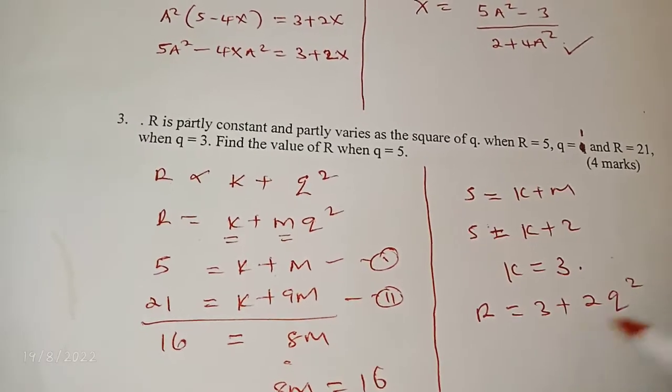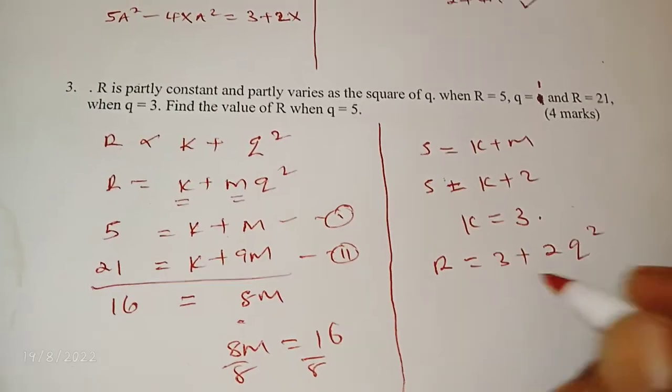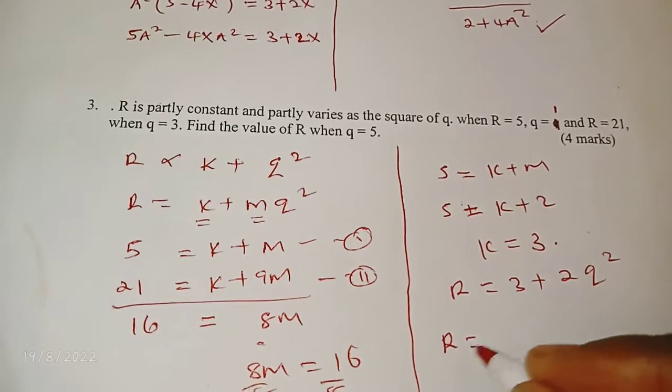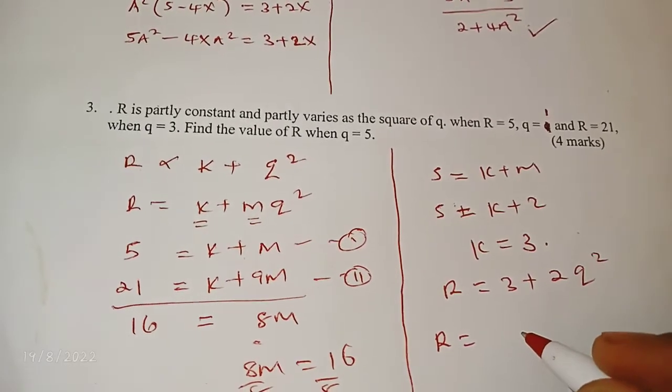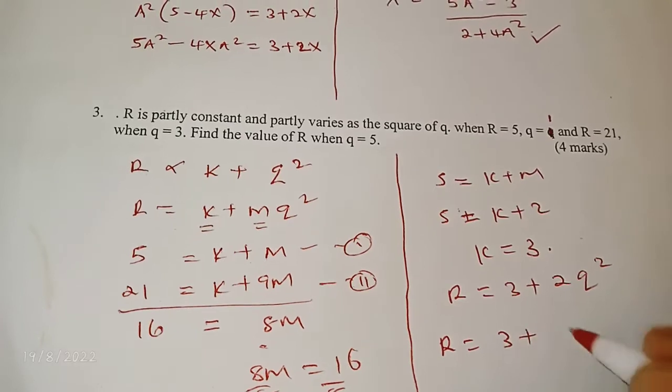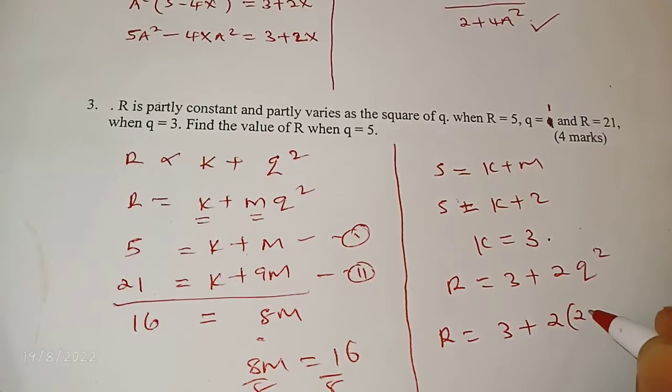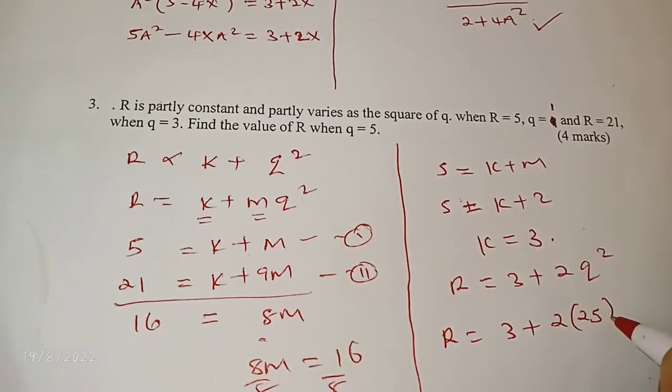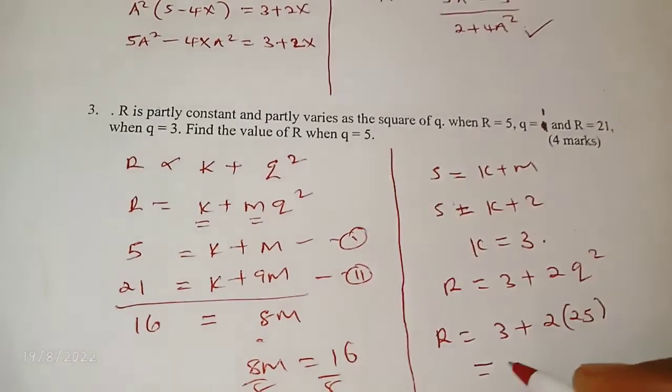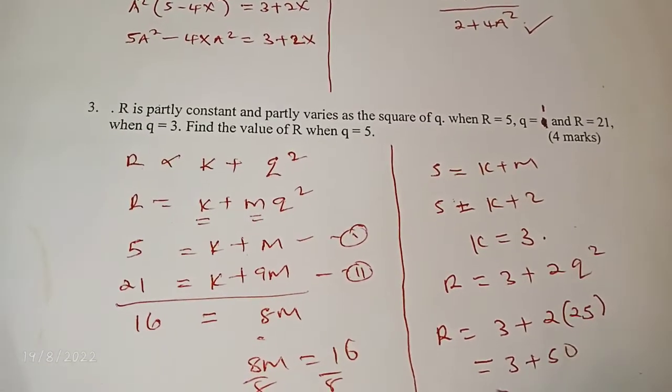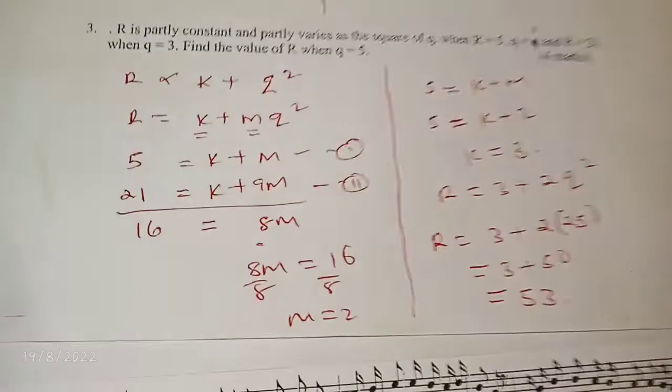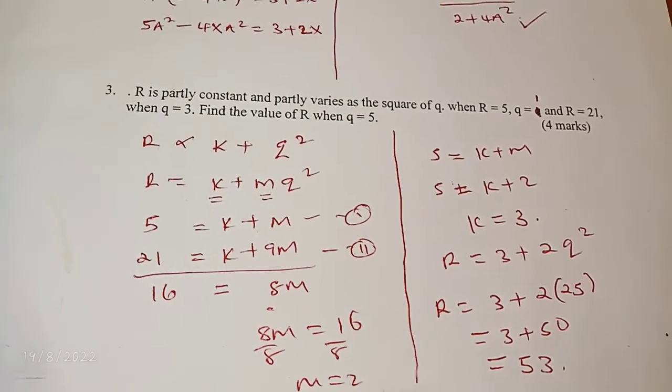Now r equals 3 plus 2q squared. This is now what we call the equation connecting, and we are supposed to determine r when q is 5. So we have r equals 3 plus 2 times 25, that's when you square, and this gives me 3 plus 50, which is 53. Thank you.